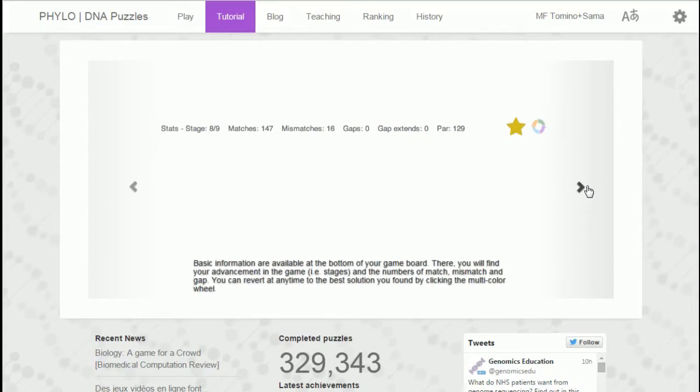Basic information is available at the bottom. There you will find advancement in the game, stages, number of match, mismatch and gap. You can revert at any time to the best solution you found by clicking the multicolor wheel.